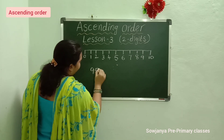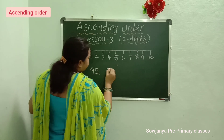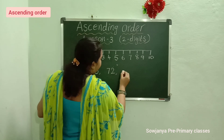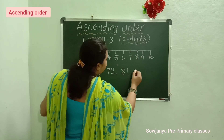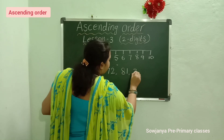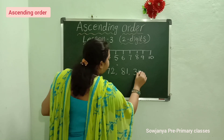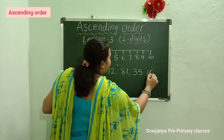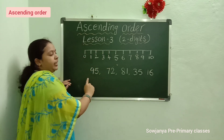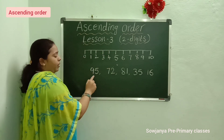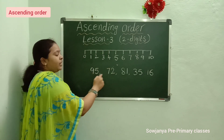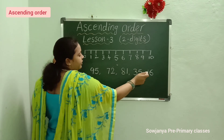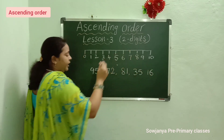The numbers are: 95, 72, 81, 35, 16. I have written the problem — 95, 72, 81, 35, 16.